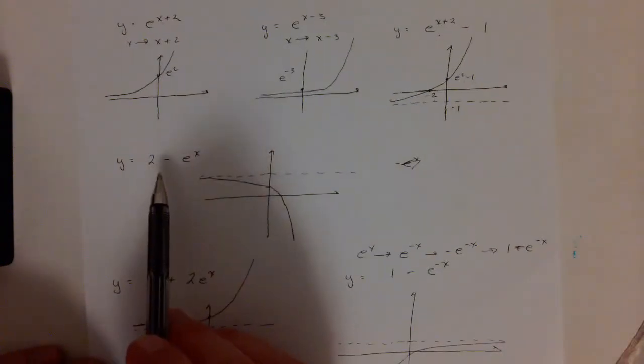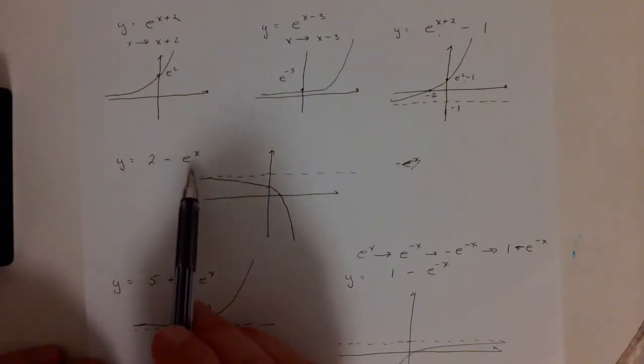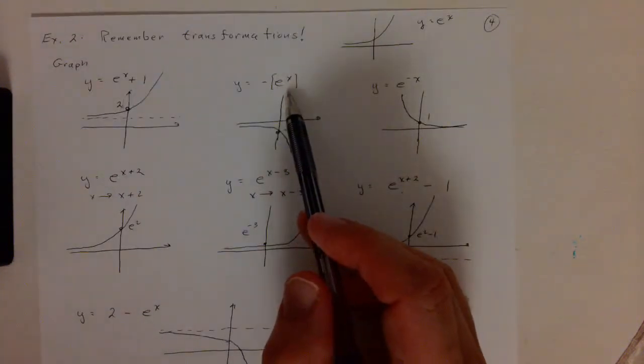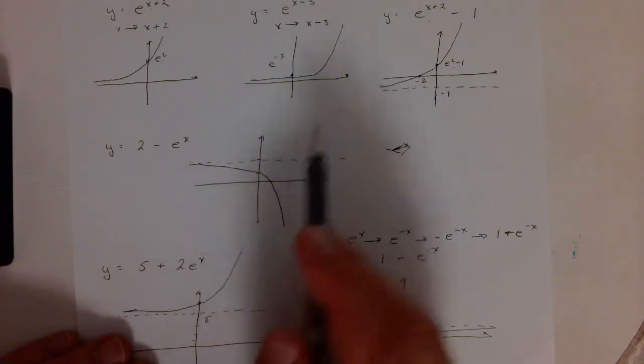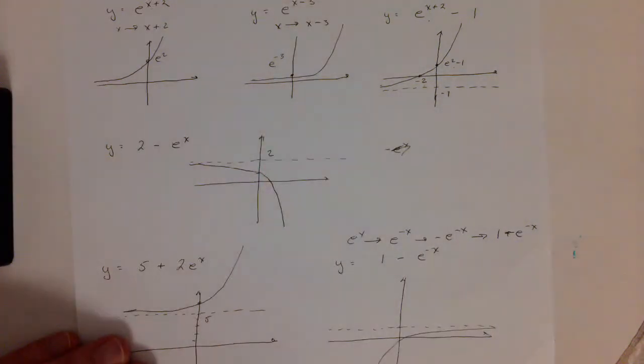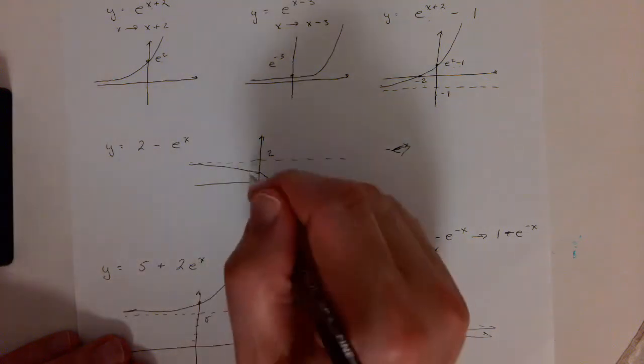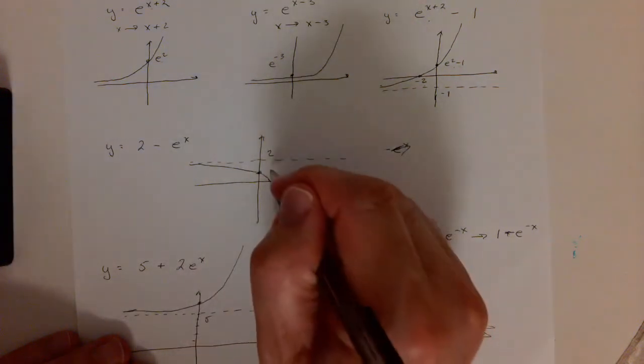The next one, 2 minus e to the x, we're doing a couple things here. We take the graph of minus e to the x and we've shifted it up 2 units. We're adding 2 to it, so that's why the asymptote is up here at 2. And again, you can check that the y-intercept is going to be at 1.